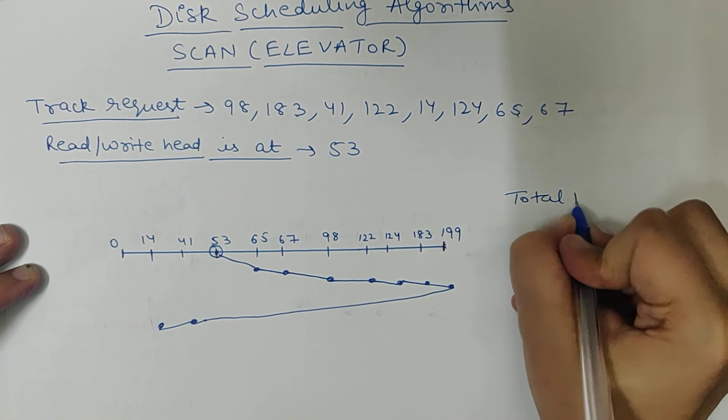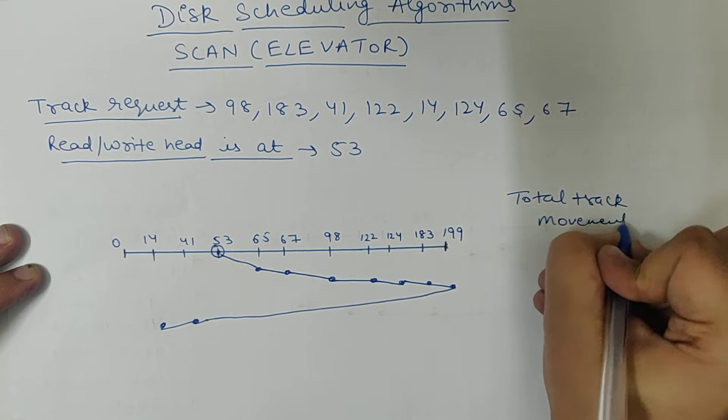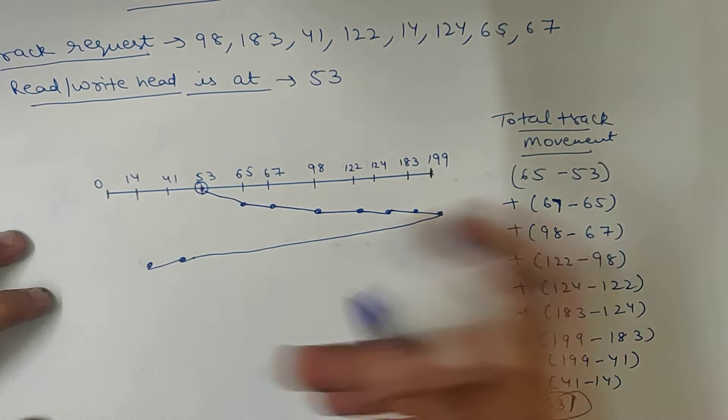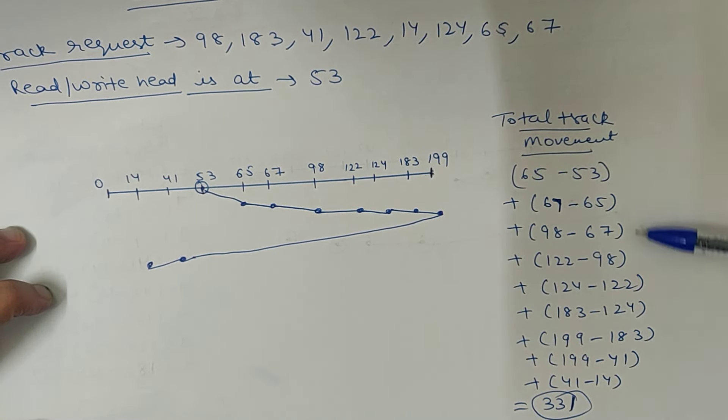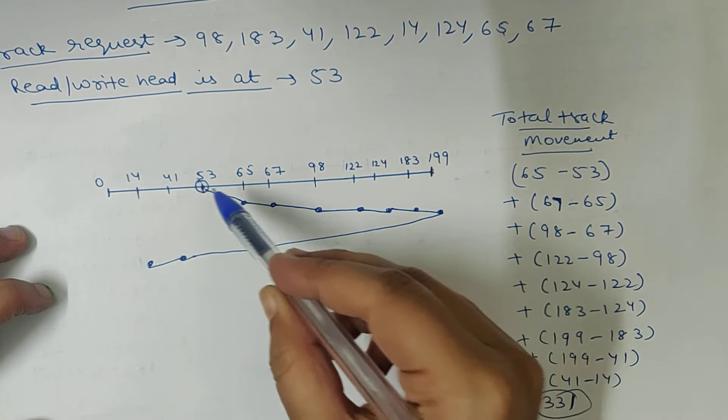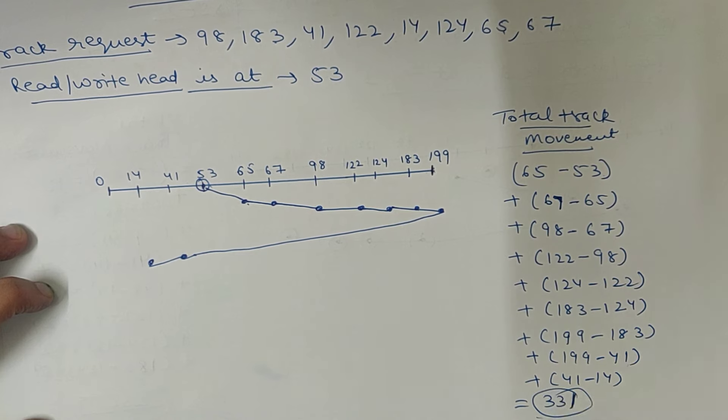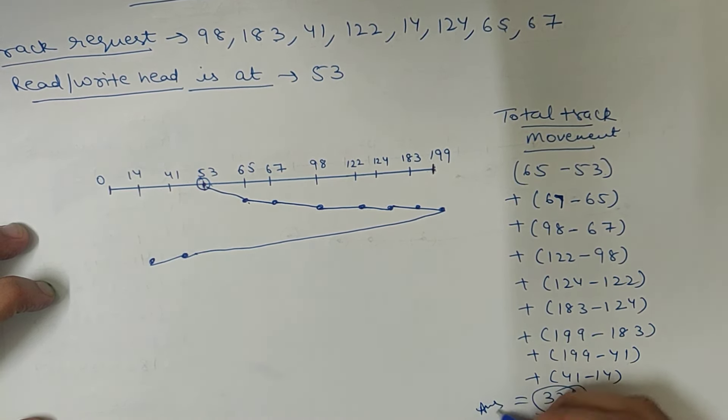Now you have to calculate total track movement. Same example as we have calculated, we will also calculate it. This is how we calculate the total track movement. 65 minus 53, like this. And our total track movement answer is 331, which is our answer.